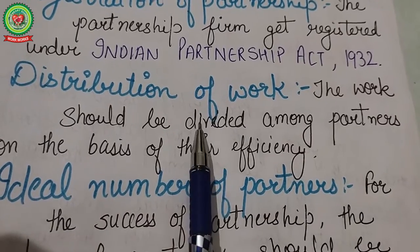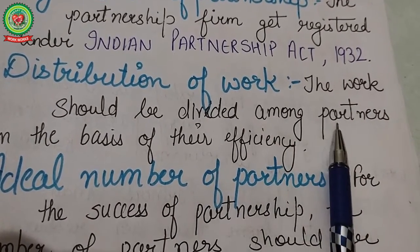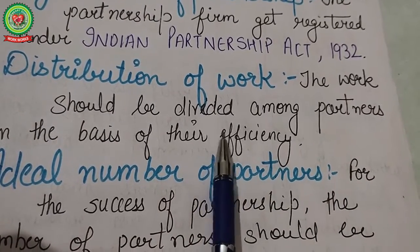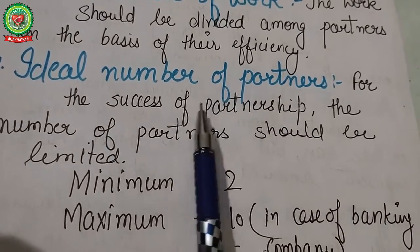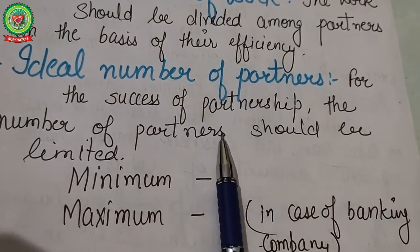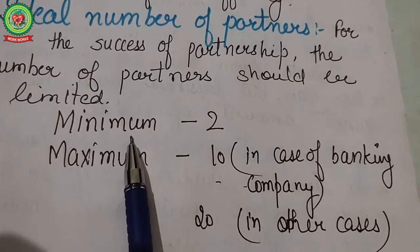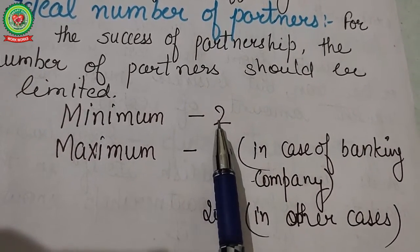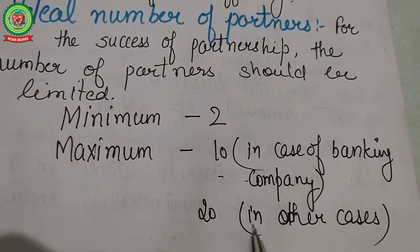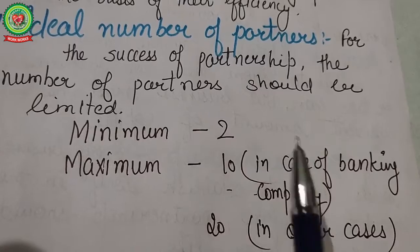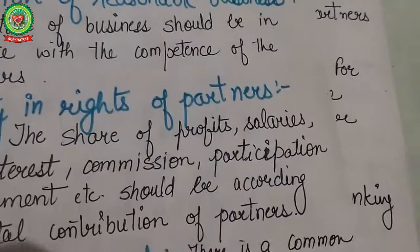Next is distribution of work: the work of the partnership should be divided among partners on the basis of their efficiency, knowledge, or specialization. Next is ideal number of partners: for the success of the partnership, the number of partners should be limited — minimum two persons and maximum 10 in case of a banking company and 20 in other cases.